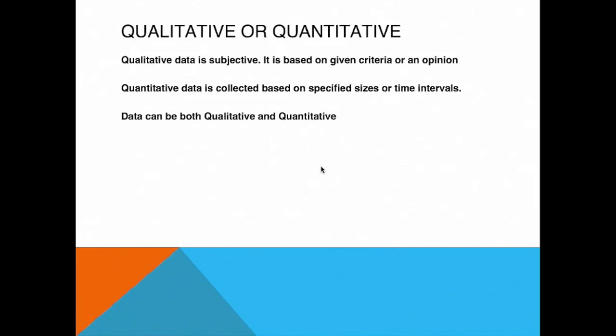Data can be both qualitative and quantitative. And what that means is that any data that we collect can both be tailored to meet a certain specification and it can also be collected at given intervals or in specific sizes. So these two terms are not mutually exclusive. Any given data can be qualitative or quantitative.